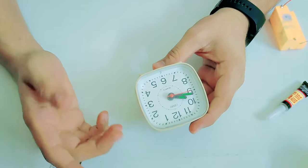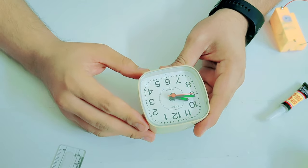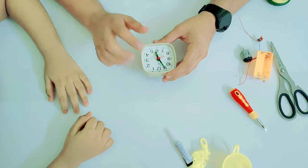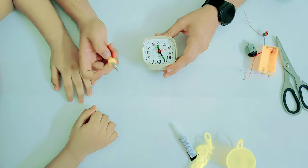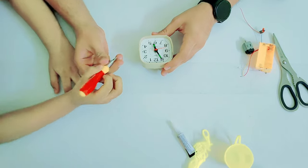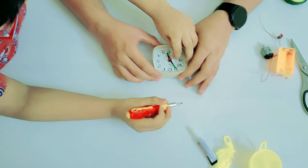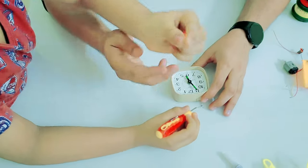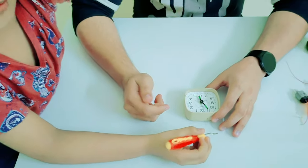The next step is to get your alarm clock. Now, there is a glass here. What we need to do is we need to remove the glass. Okay, now the glass is off. What you need to do now is remove the second hand. Ayaan, you want to do it? Yes. You want to use your hand? Yes. This is the second hand. We have to remove it.